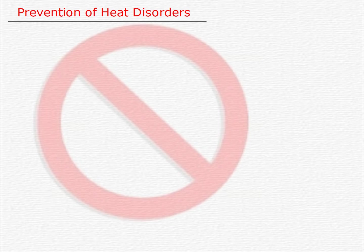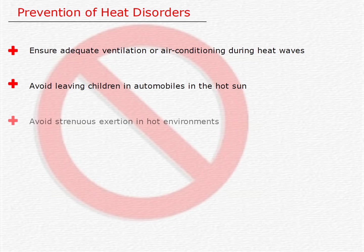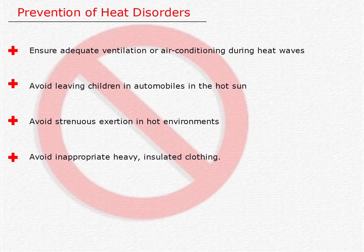The following are the measures to be taken to prevent heat disorders. One should ensure adequate ventilation or air conditioning during heat waves, particularly for people who are very old or very young. Avoid leaving children in automobiles in the hot sun, particularly with closed windows. Avoid strenuous exertion in hot environments and poorly ventilated spaces. Avoid inappropriate heavy insulated clothing. If exertion in heat is unavoidable, wear open mesh clothing.